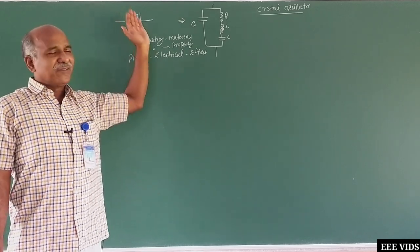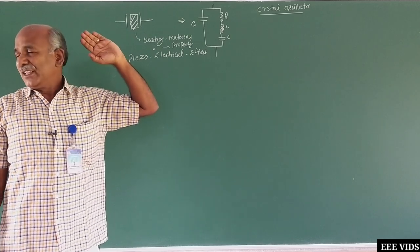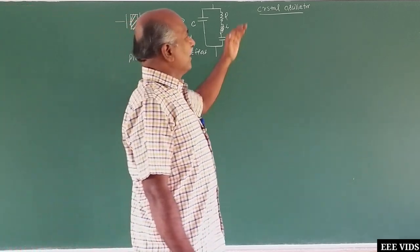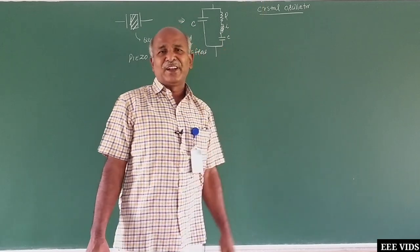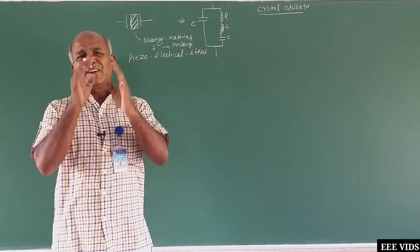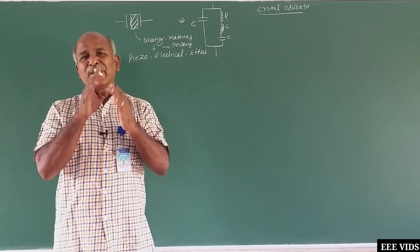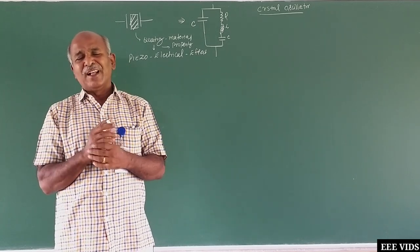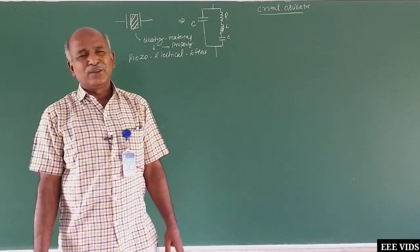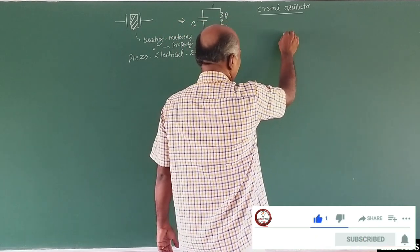When the crystal starts vibrating, it generates electrical energy. The circuit is called the crystal oscillator. In the crystal oscillator circuit, just like a Hartley oscillator, the two inductances are replaced by a crystal. So here, the inductance in the Hartley oscillator is replaced by the crystal.